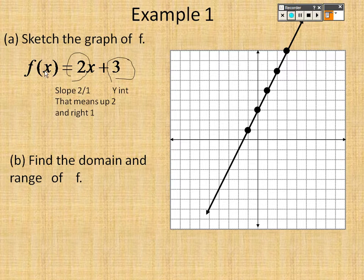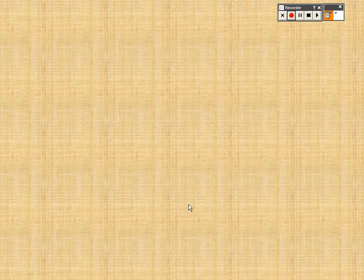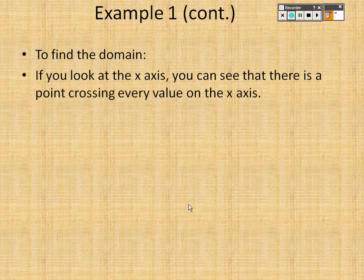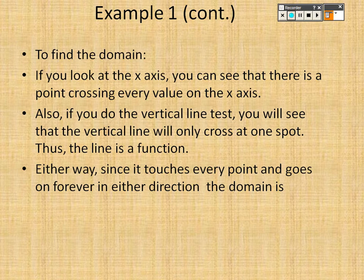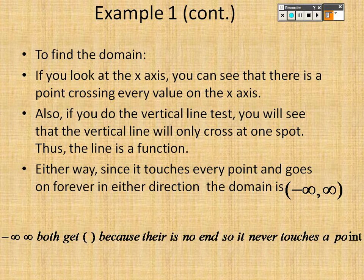Find the domain. The domain is all real numbers because there are no roots and no fractions. The range — you look at the y-axis touching every possible y value as well, so it's all real numbers also. You can do the vertical line test and see the vertical lines will only cross at one spot, so the line is a function. Since it touches every point and goes on forever in either direction, the domain is negative infinity to infinity, with parentheses on either side because they're infinities.